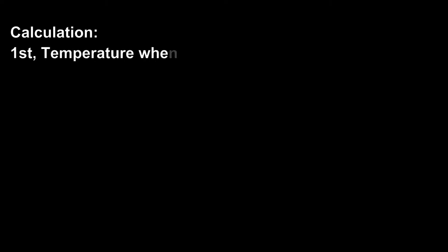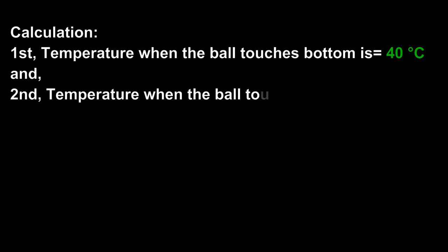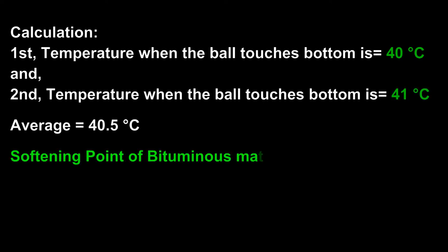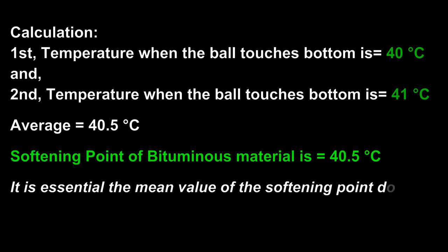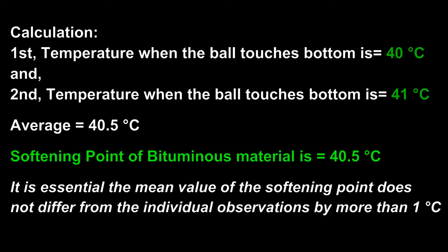The first temperature when the ball touches bottom is 40 degrees Celsius. And the second temperature when the ball touches bottom is 41 degrees Celsius. The average is 40.5 degrees Celsius. So, softening point of bitumen is 40.5 degrees Celsius.